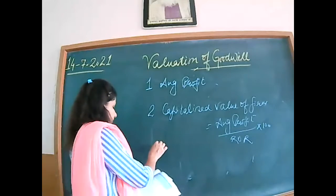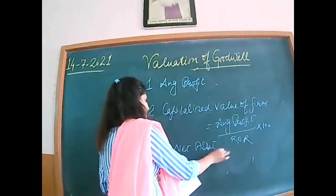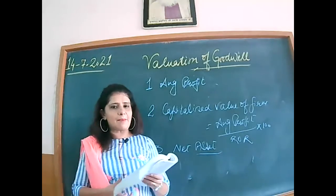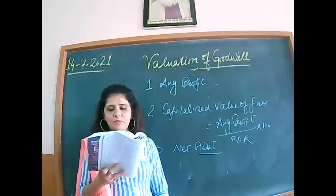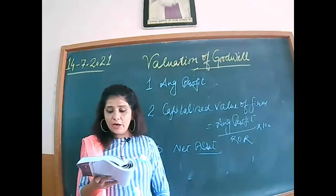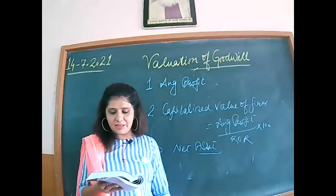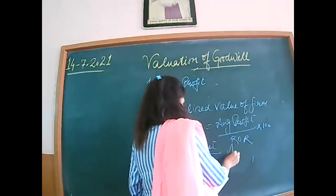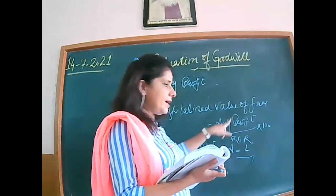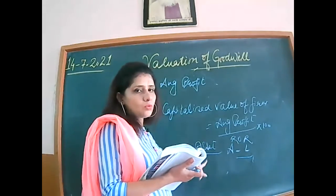Next, calculate net assets. Net assets means take all assets, exclude goodwill, non-trade investments, and fictitious assets, then subtract outside liabilities. That gives you net assets, which equals A minus L. The capitalized value of the firm minus net assets gives you goodwill.